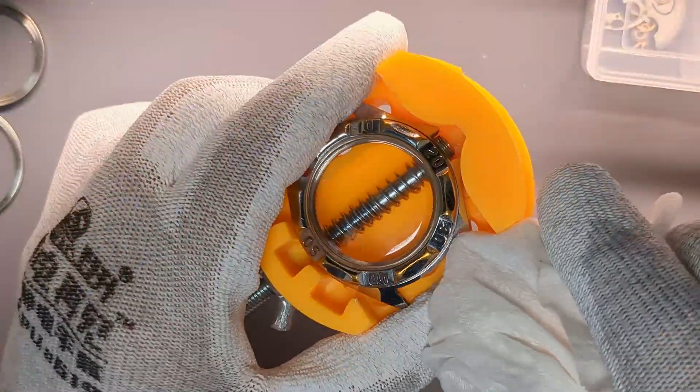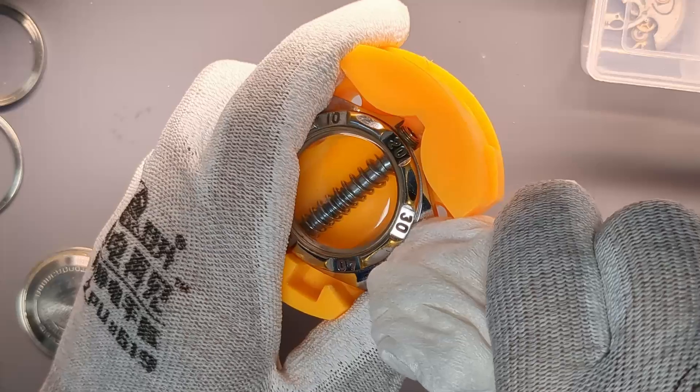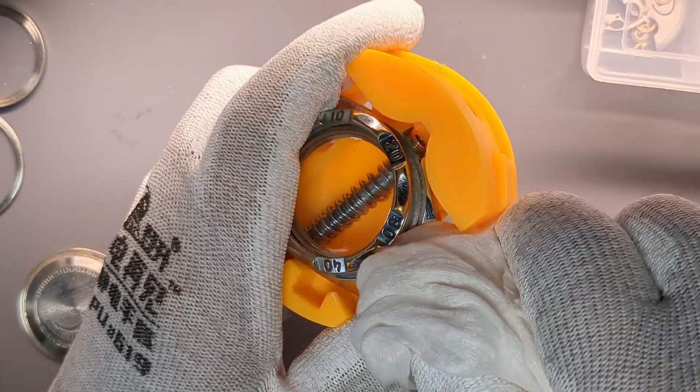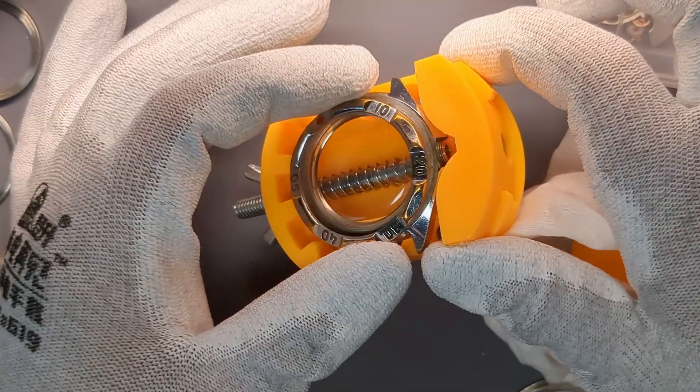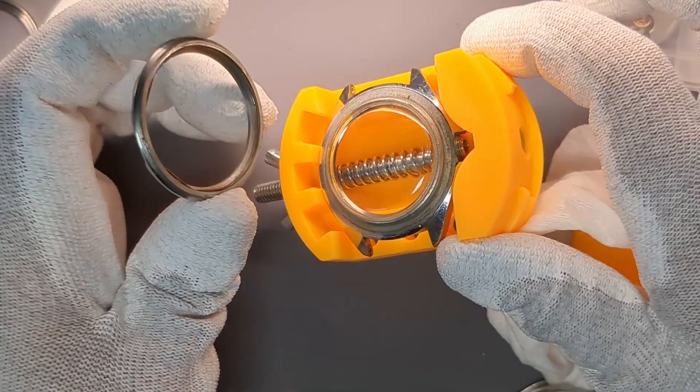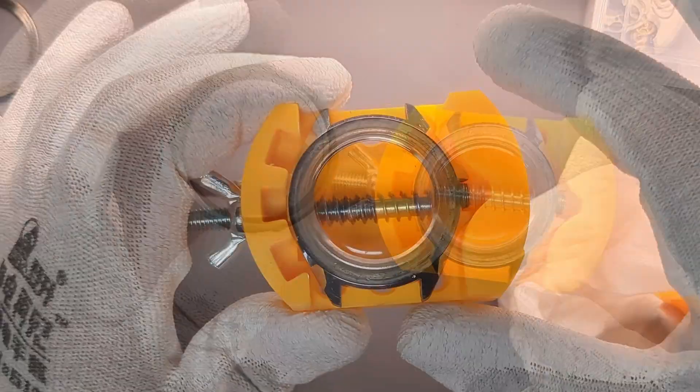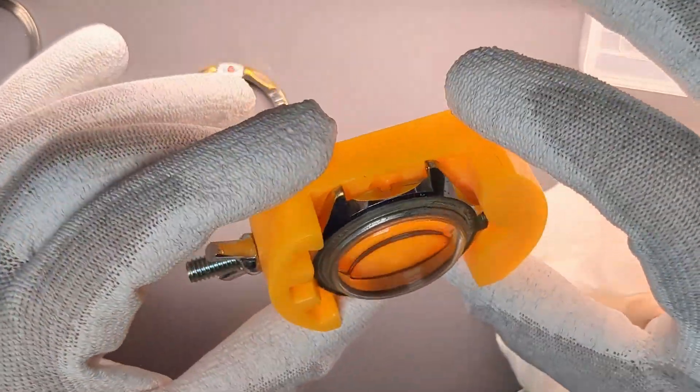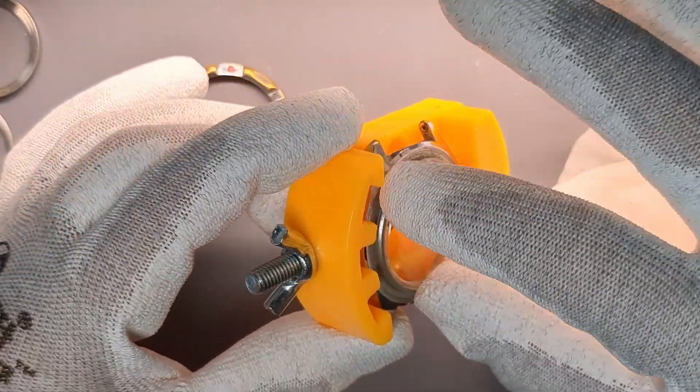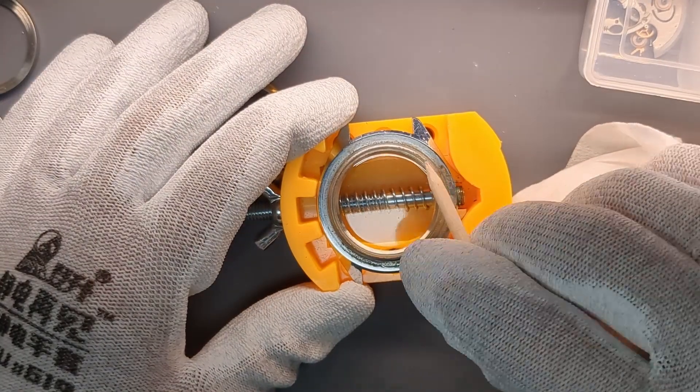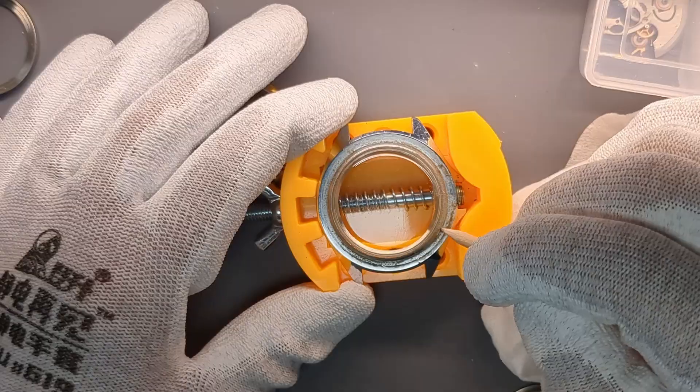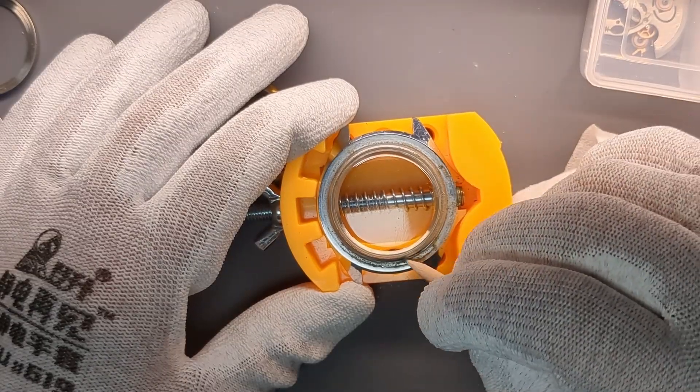I'm removing the bezel with a case opening tool, protected with cloth and carefully prying against the case to avoid scratches. The crystal requires some polishing, but first I will clean the case. I'm using pegwood and alcohol to clean the main dirt and later on I will place it in ultrasonic cleaner.